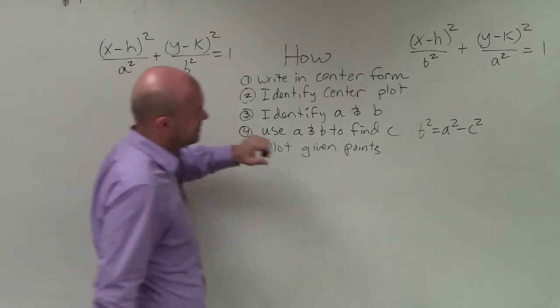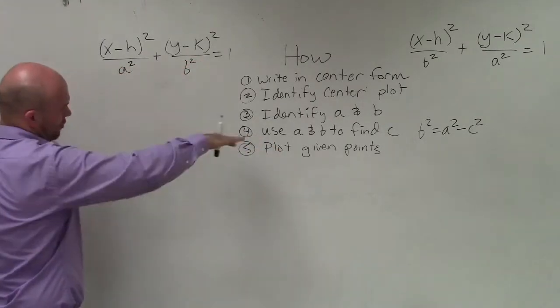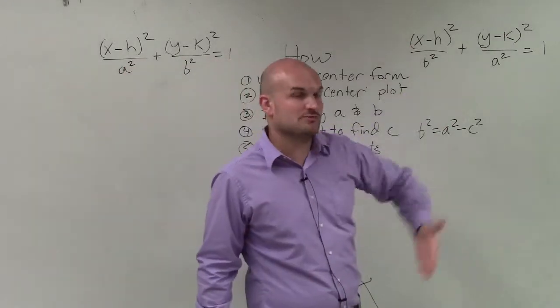Now, first of all, I have two equations for the ellipse. Here is where my major axis is horizontal. Here is going to be where my major axis is going to be vertical.